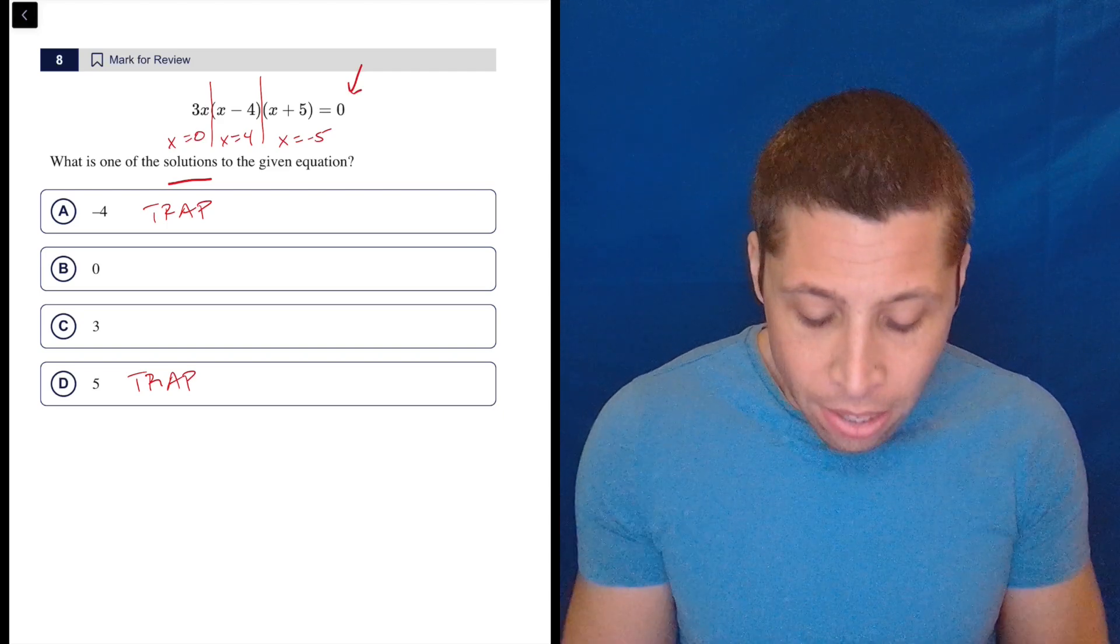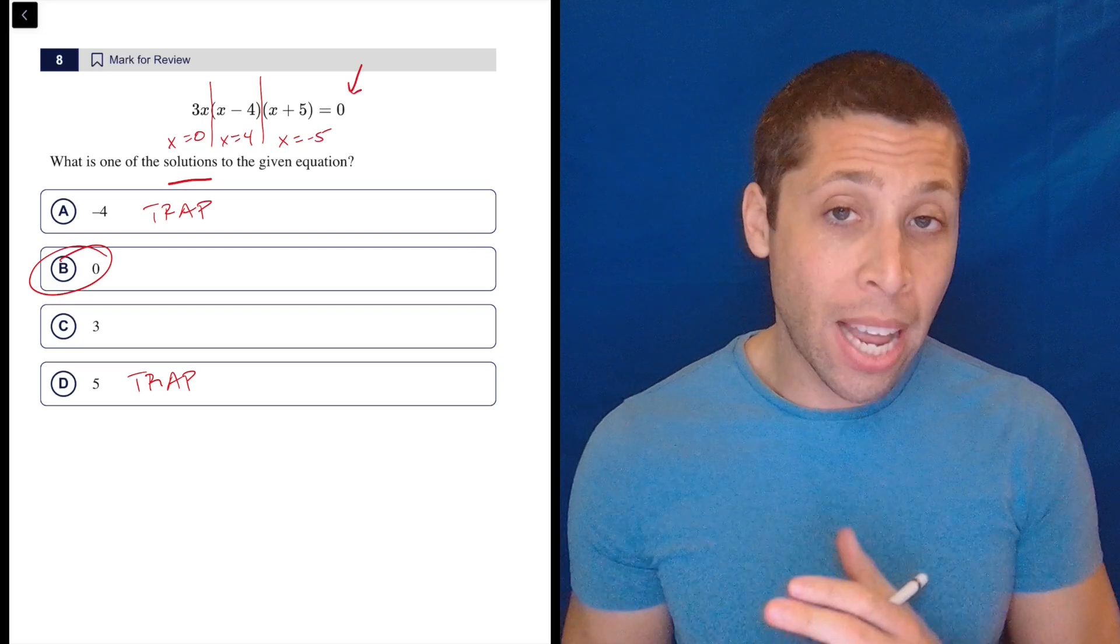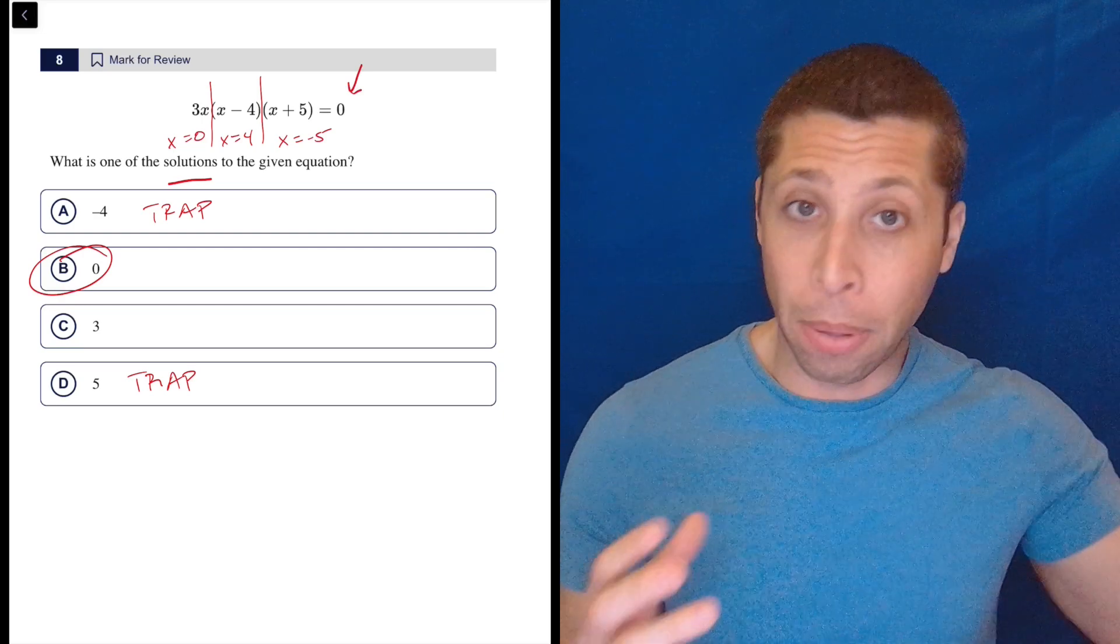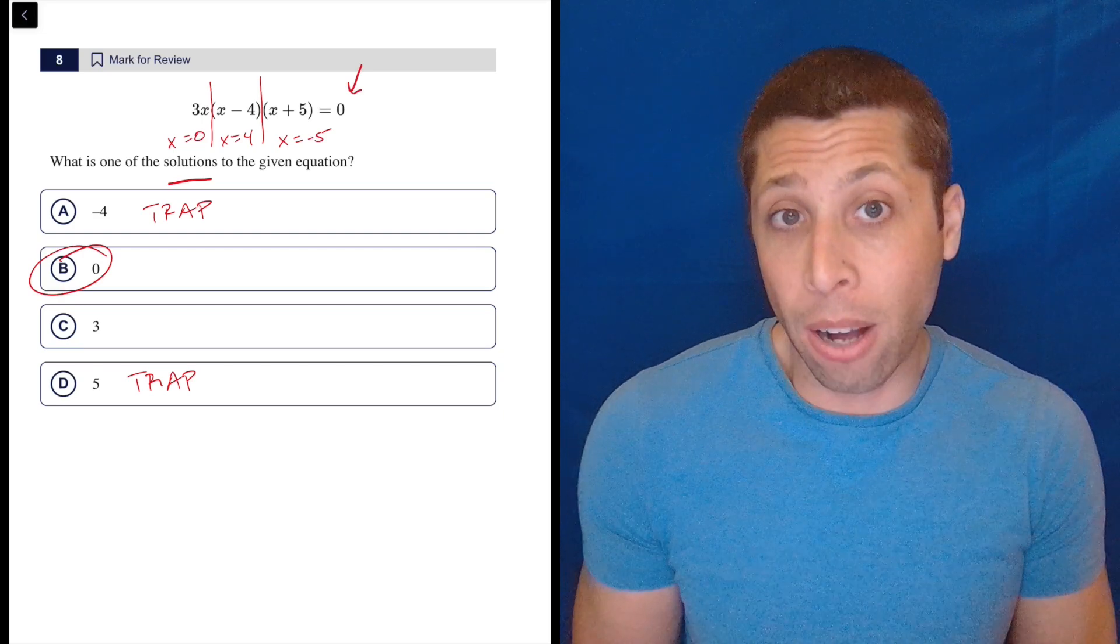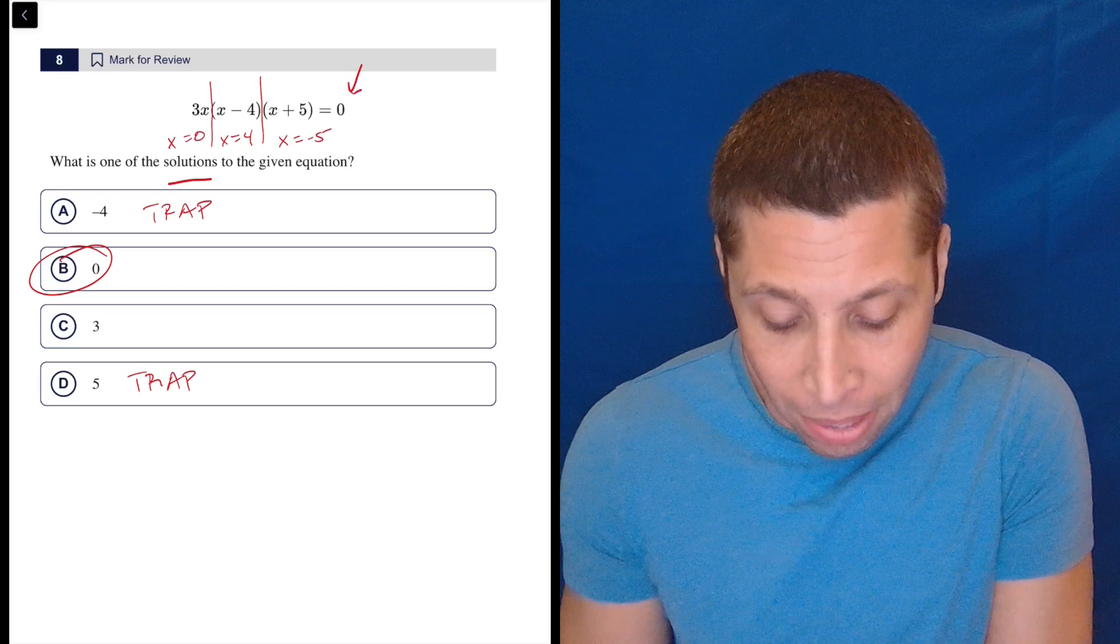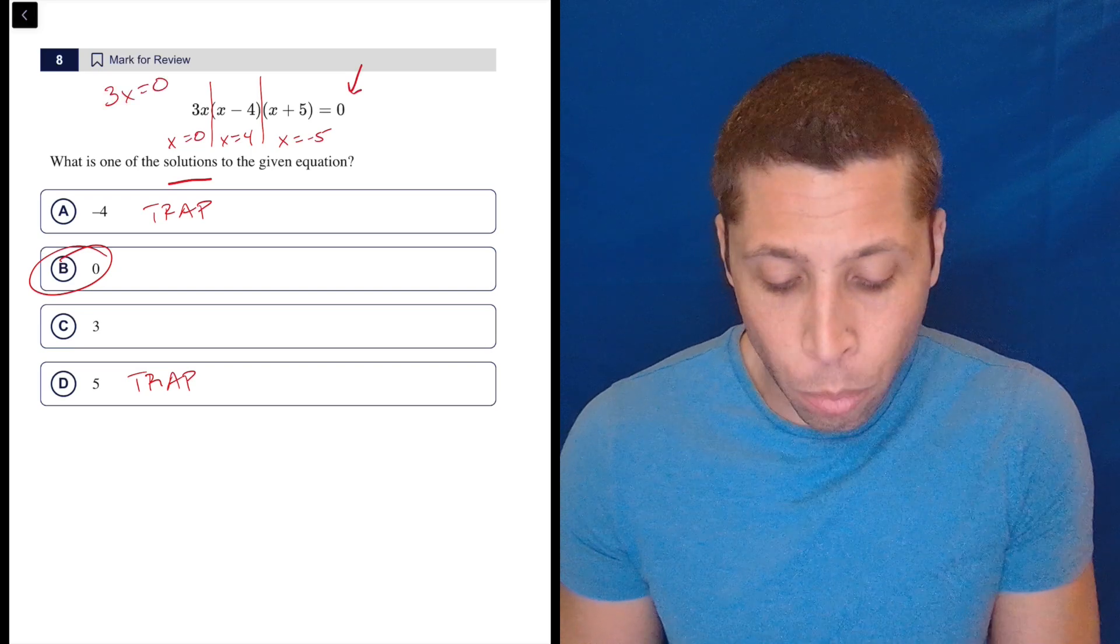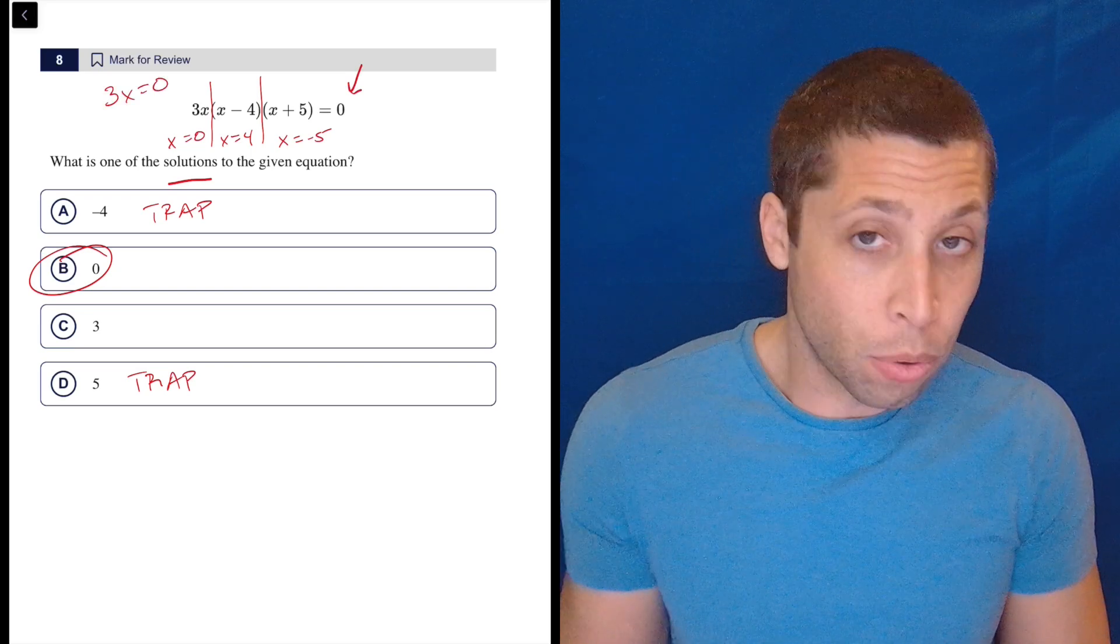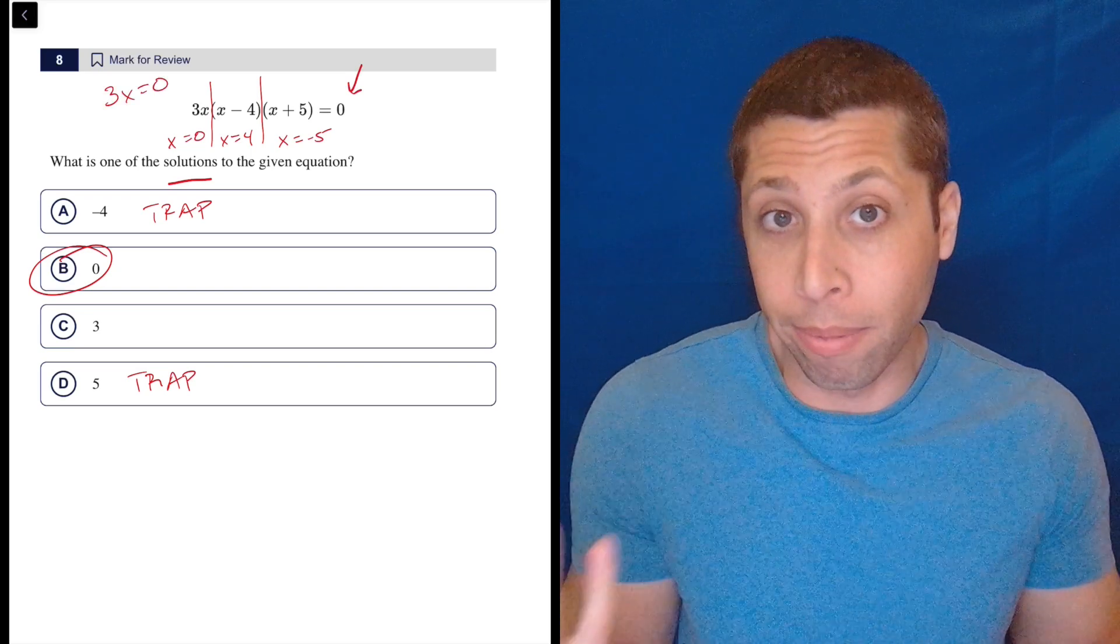And we just tend to forget that when we have an x kind of multiplied without a plus or minus thing attached to it, it still counts. And so we would set three x, basically you're creating a mini equation where three x is equal to zero. If you divide by three, you're just going to get x is zero and that's it.